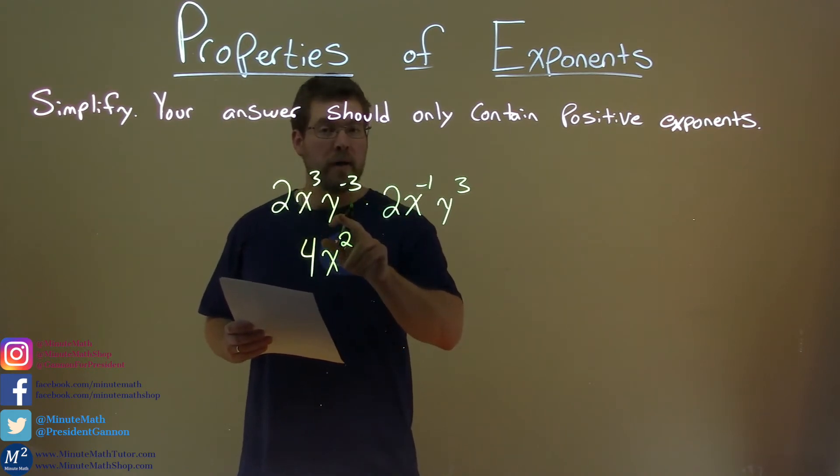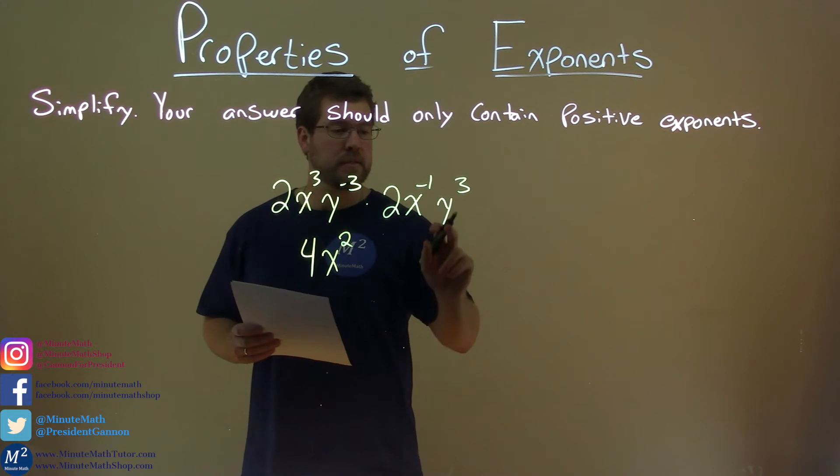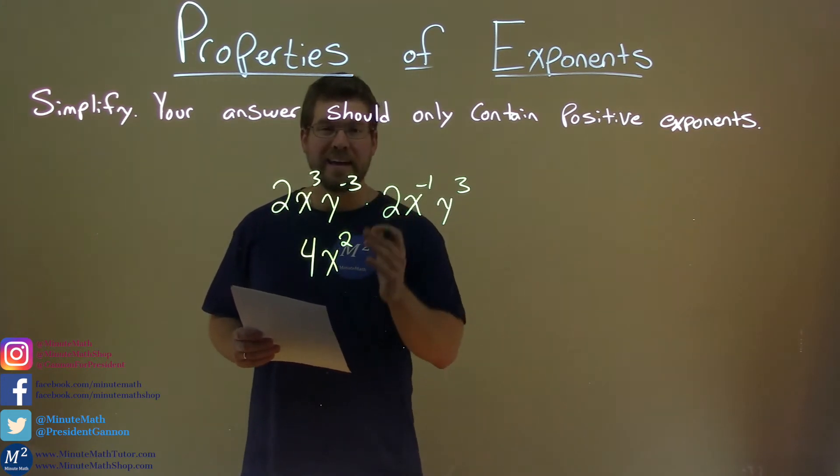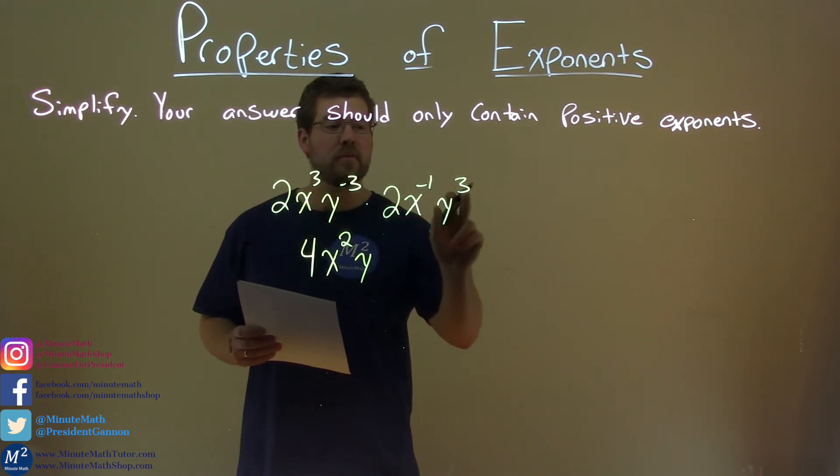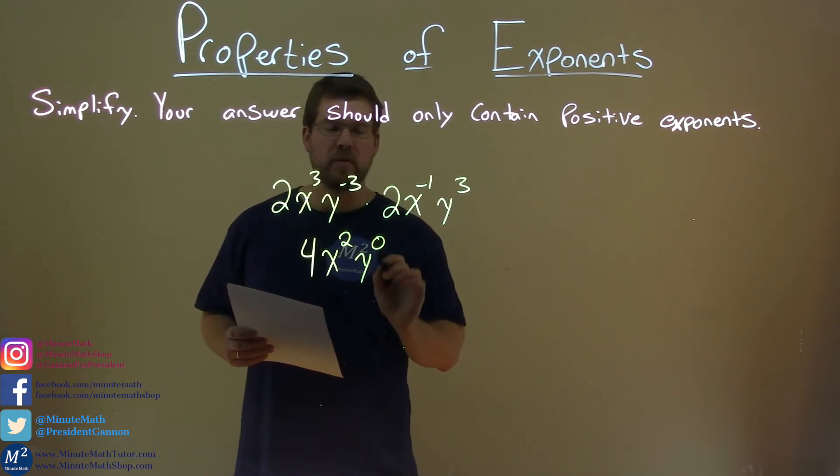Last one here, we have y's. y to the negative third, times y to the positive third. Again, same base, add the exponents. That's y to a negative 3 plus 3, which is y to the zero power.